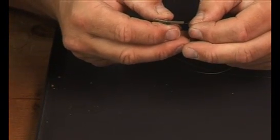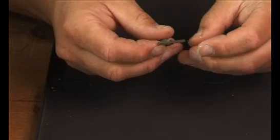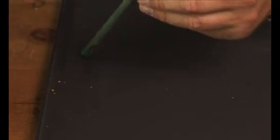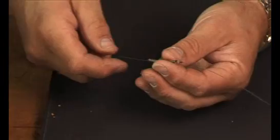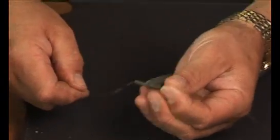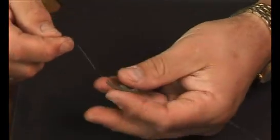With the line threaded through the tube, pull the controller up to the ring and simply jam the tube over the ring.